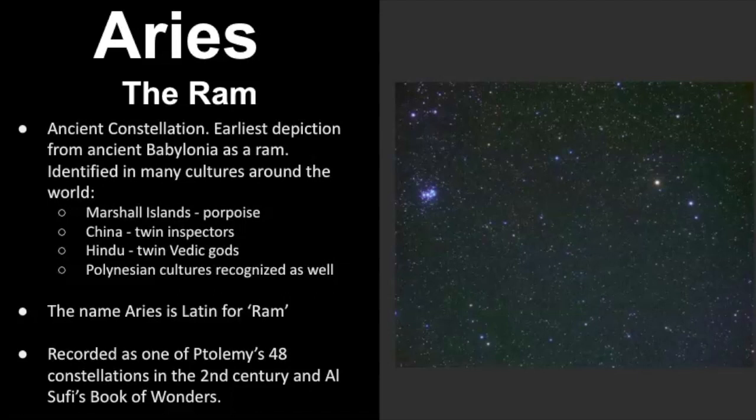It is classified as an ancient constellation and its earliest depiction comes from ancient Babylonia where it was represented as a ram. But there's other cultures around the world that see something different. For example, in the Marshall Islands, they see it as a porpoise. China sees twin inspectors. In the Hindu culture, we see twin Vedic gods and even the Polynesian cultures recognize Aries but see something a little different.